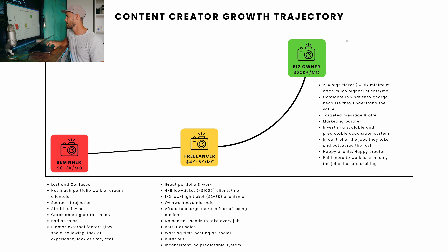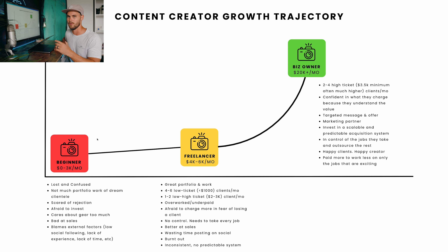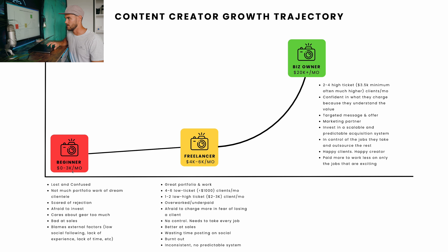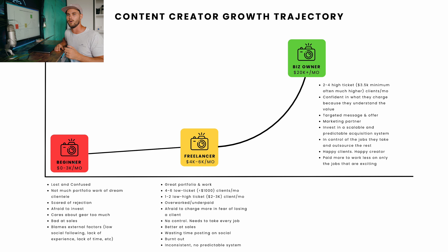I'm going to break down all three stages and the things to watch out for and what to do to get to the top. Starting at the beginner stage — and when I define beginner, that doesn't necessarily mean you just picked up a camera yesterday. This is more about your maturity level in terms of the business aspect. Zero to three thousand a month. There are people who've been shooting for six years that are still in this beginner stage. If you are a beginner, this video is probably not for you — check out the video on how to build your content business in 2023.